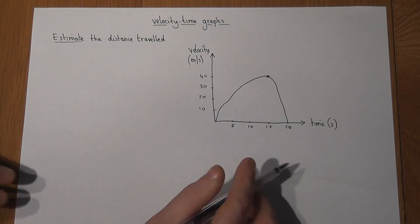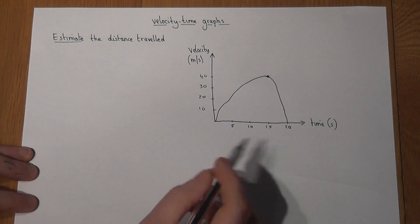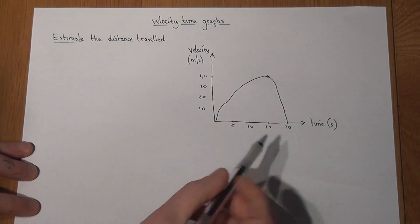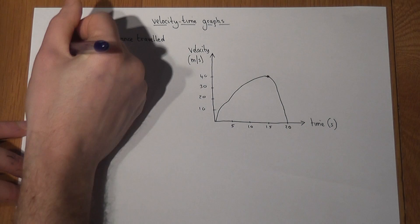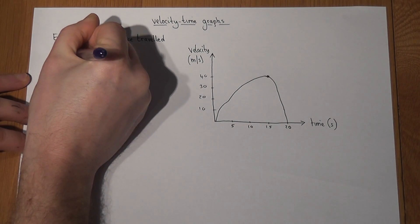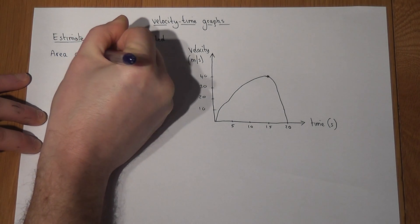Now the one key skill that this video reviews is how to find distance given a velocity-time graph, and the simple rule to know is that the area gives the distance.